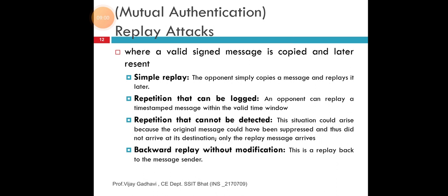In mutual authentication and replay attacks, there are types: simple replay, repetition that can be detected, repetition that cannot be detected, and backward replay without modification. In simple replay, the opponent simply copies a message and replays it later. An opponent can replay a timestamped message within the valid time window. In repetition that cannot be detected, the original message could have been suppressed and did not arrive at its destination — only the reply message arrives. In backward replay without modification, the message is replayed back to the message sender.